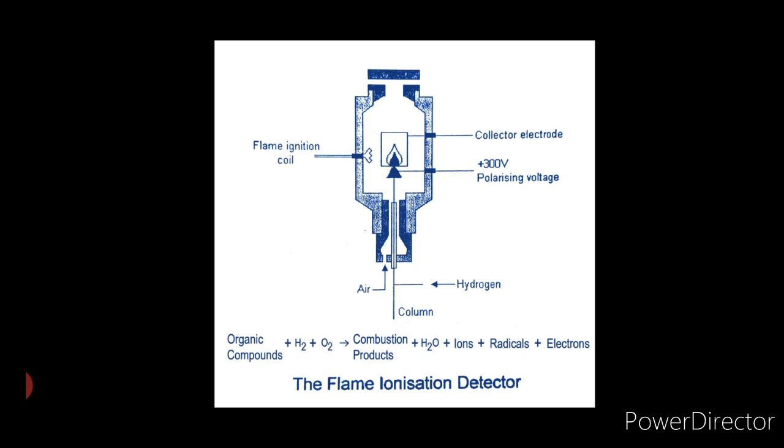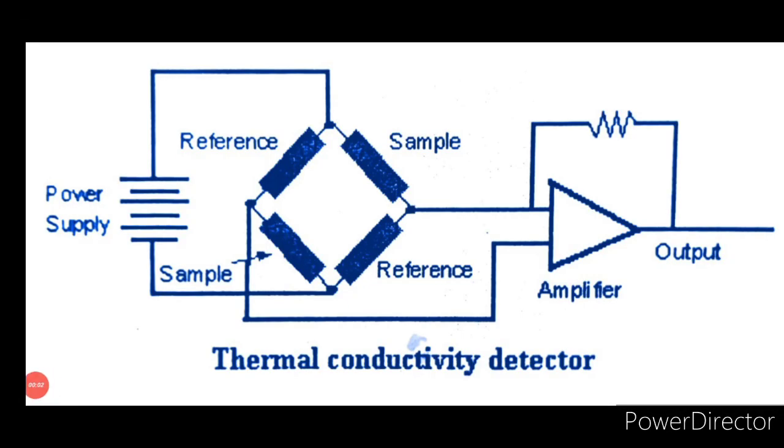Now let us understand thermal conductivity cell detector. Thermal conductivity cell detector functions by measuring the temperature-dependent electrical resistance of a hot wire. The detector unit consists of a platinum or platinum alloy wire through which an electrical current is passed. The hot wire is cooled as the carrier gas passes over it.